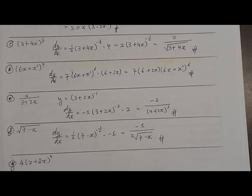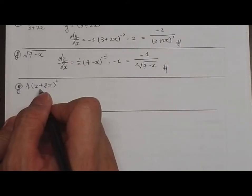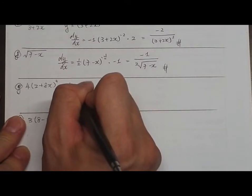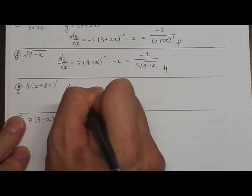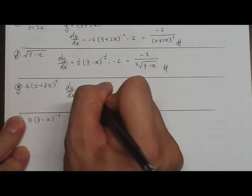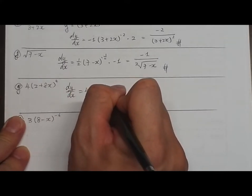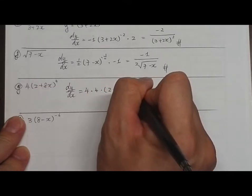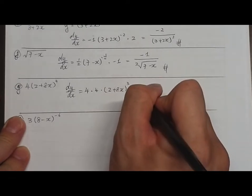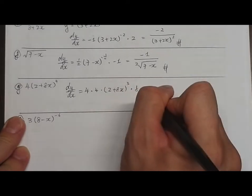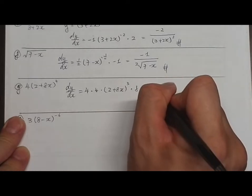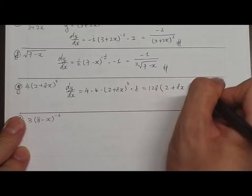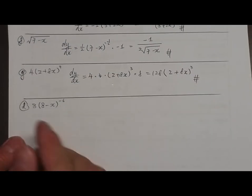Question G: y equals (2 + 8x)⁴ multiplied by 4. We bring the 4 down: dy/dx equals 4 multiplied by 4 multiplied by (2 + 8x)³ multiplied by 8, giving 128(2 + 8x)³.